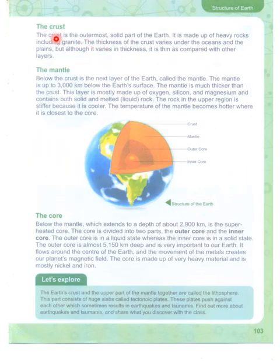The crust: The crust is the outermost, solid part of the Earth. It is made up of heavy rocks, including granite. The thickness of the crust varies under the oceans and the plains, but although it varies in thickness, it is thin as compared with other layers.